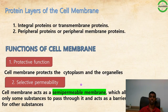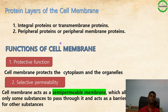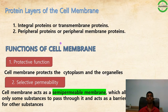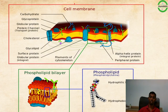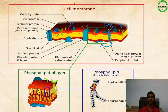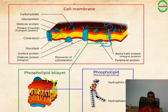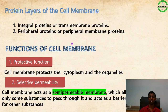The protein layers of the cell membrane consist of integral proteins (also called transmembrane proteins), which span across both surfaces, and peripheral proteins (peripheral membrane proteins), which are surface proteins connected only to one surface.